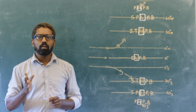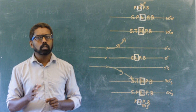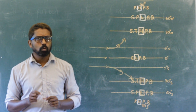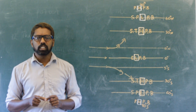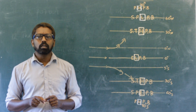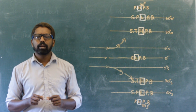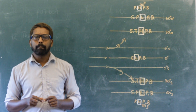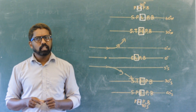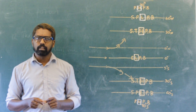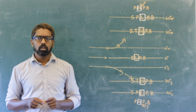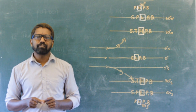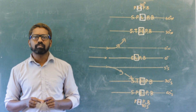You are now aware of the distribution of the pressure belts on the earth. Variations in the amount of solar energy received and the rotation of the earth contribute to the formation of different pressure belts. The pressure belts shift according to the apparent movement of the sun.